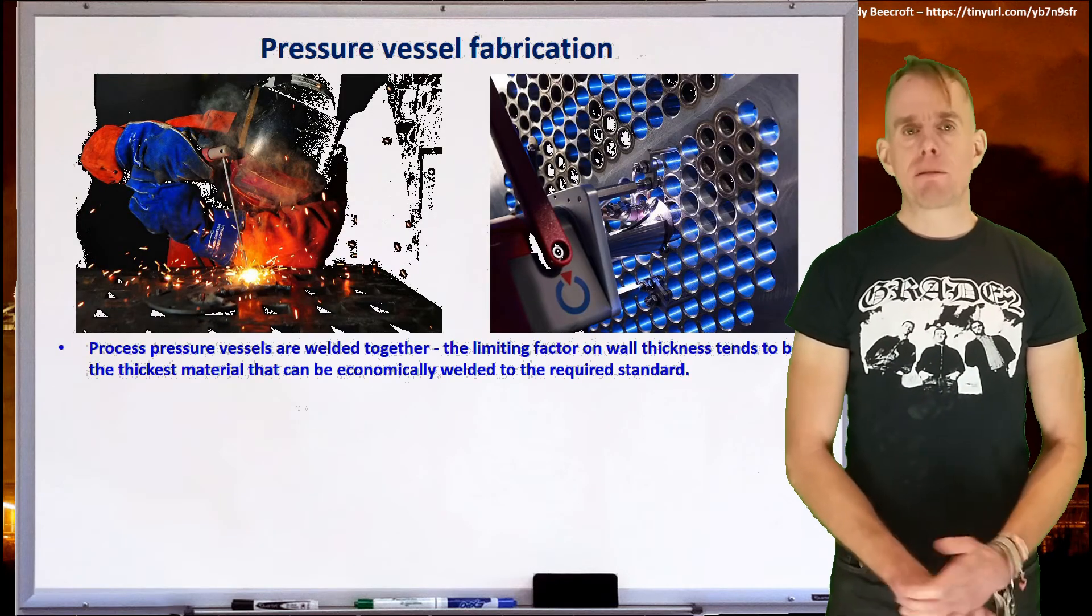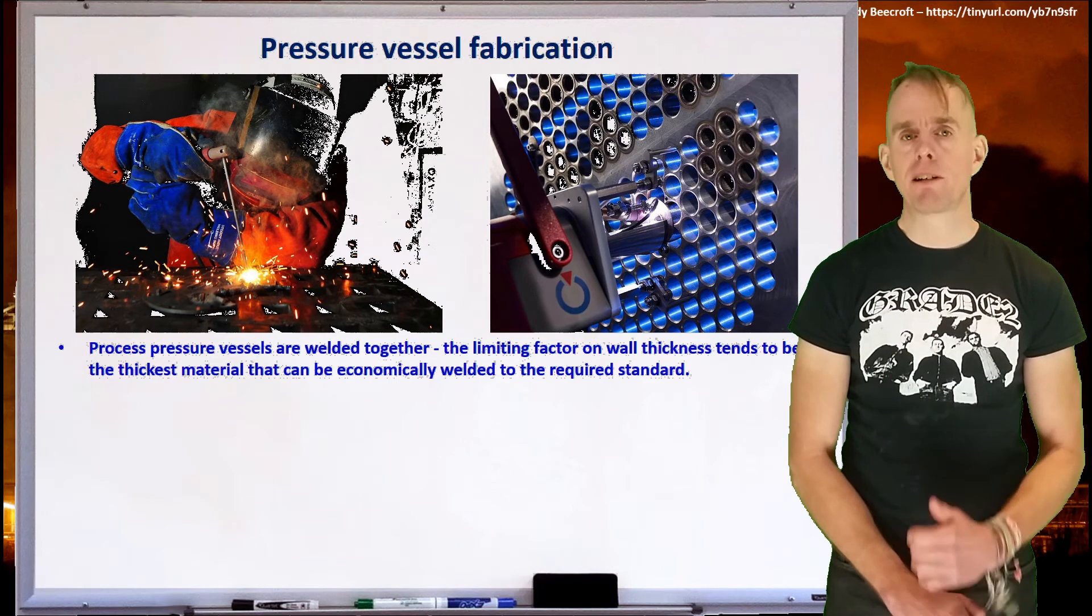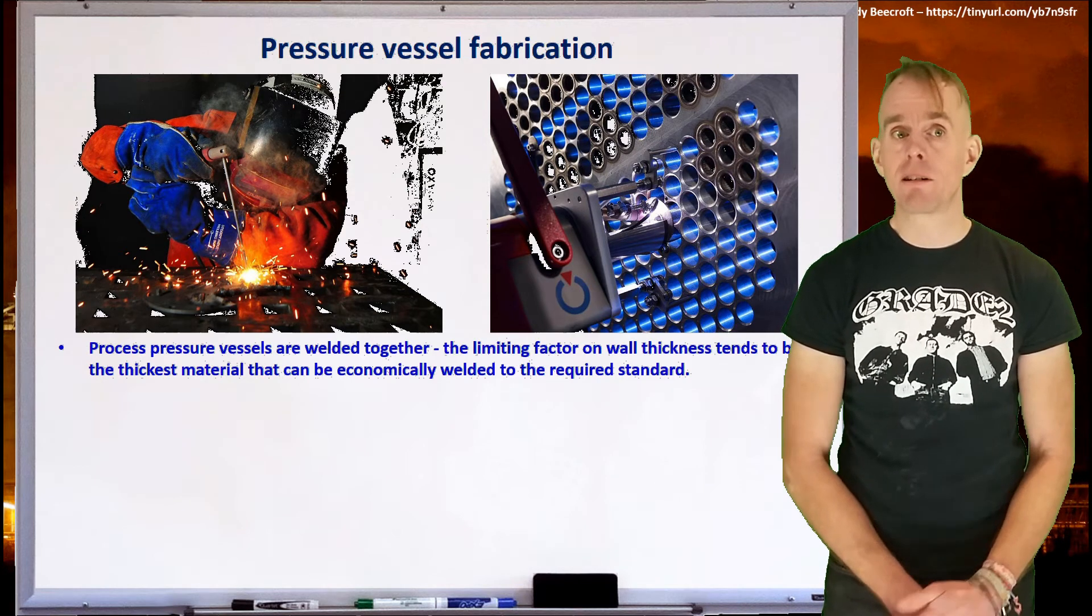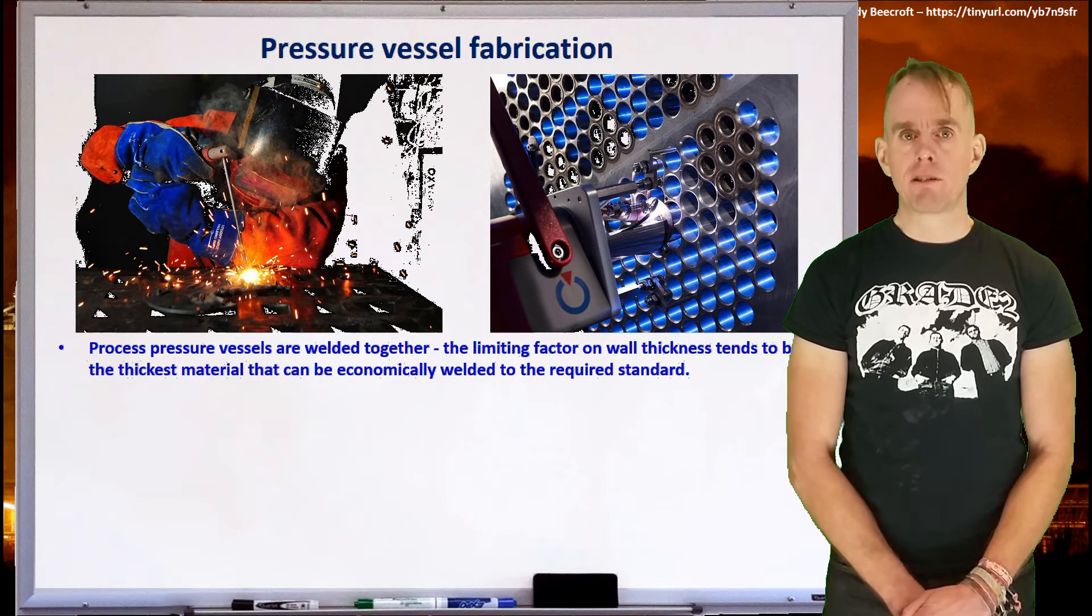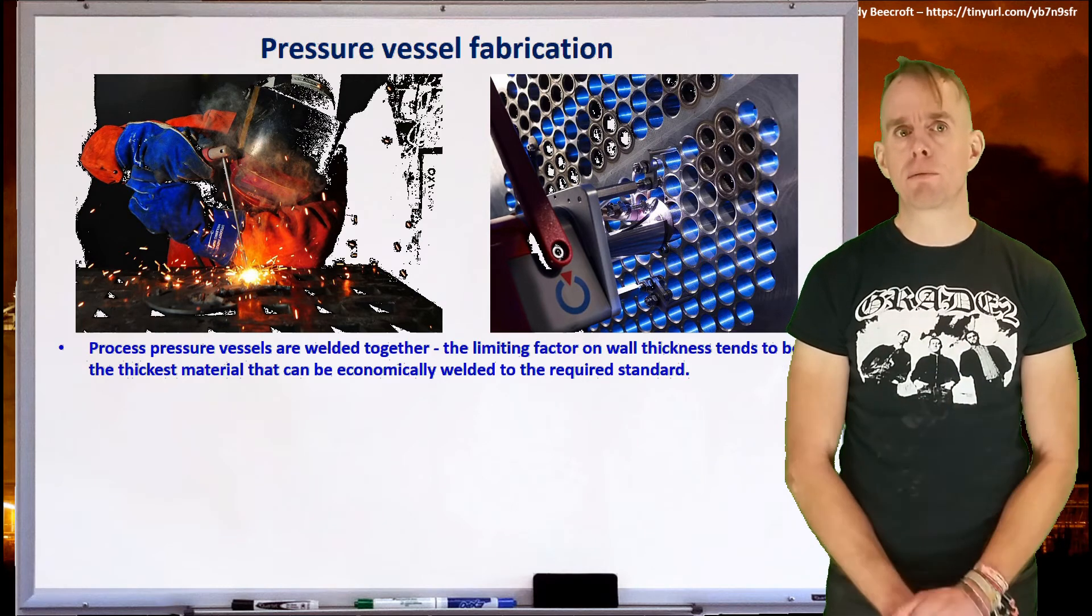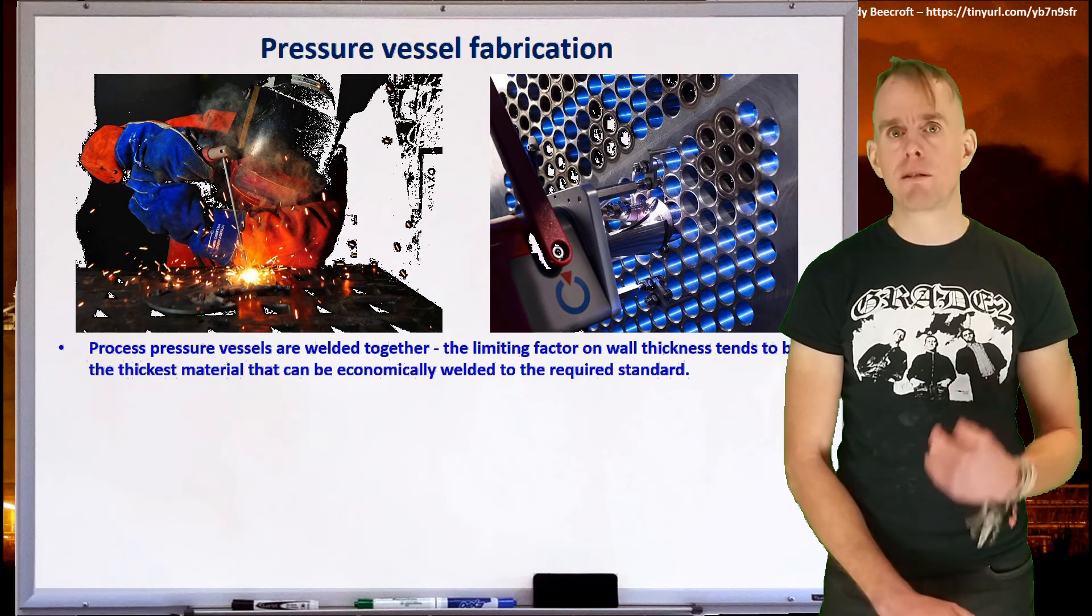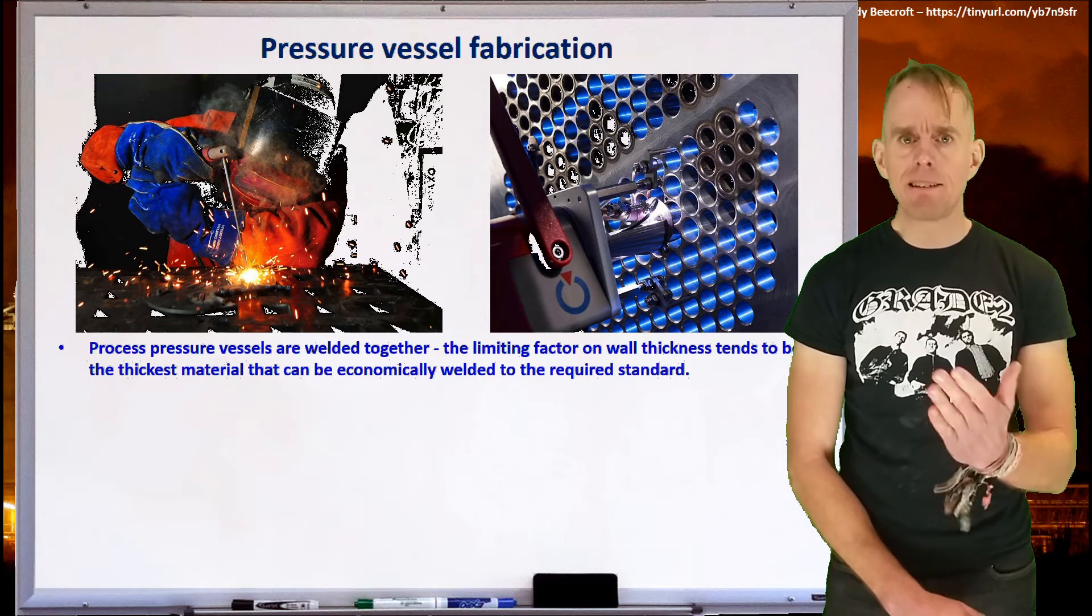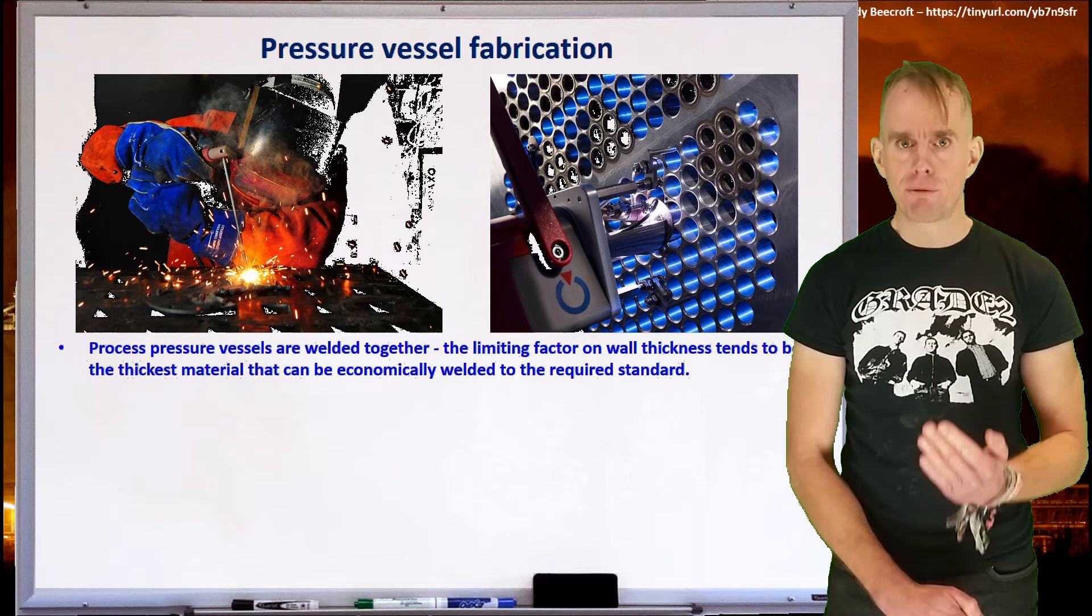Now, if you think about the fabrication of pressure vessels, they are welded pieces of equipment. And so the limiting factor on wall thickness tends to be the thickest material that can be economically welded to the required standard. Welding large thicknesses of pressure vessels is a very, very skilled job. And you need very, very skilled craftsmen or very sophisticated automated processes in order to do this. Because when you weld, it is very, very easy to incorporate defects in that weld, void spaces typically. And any defects in a weld in a pressure vessel renders that pressure vessel unsuitable for use.